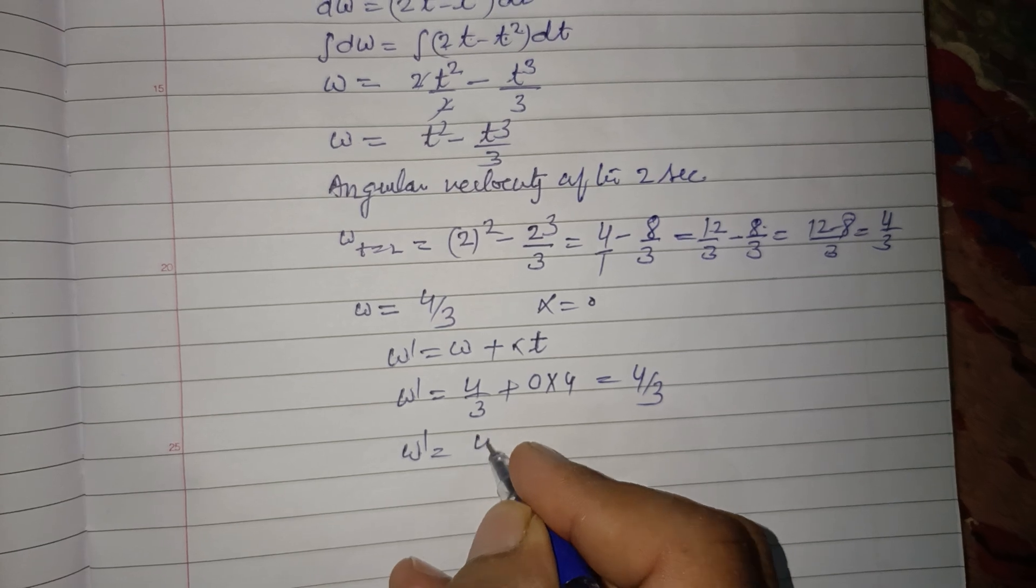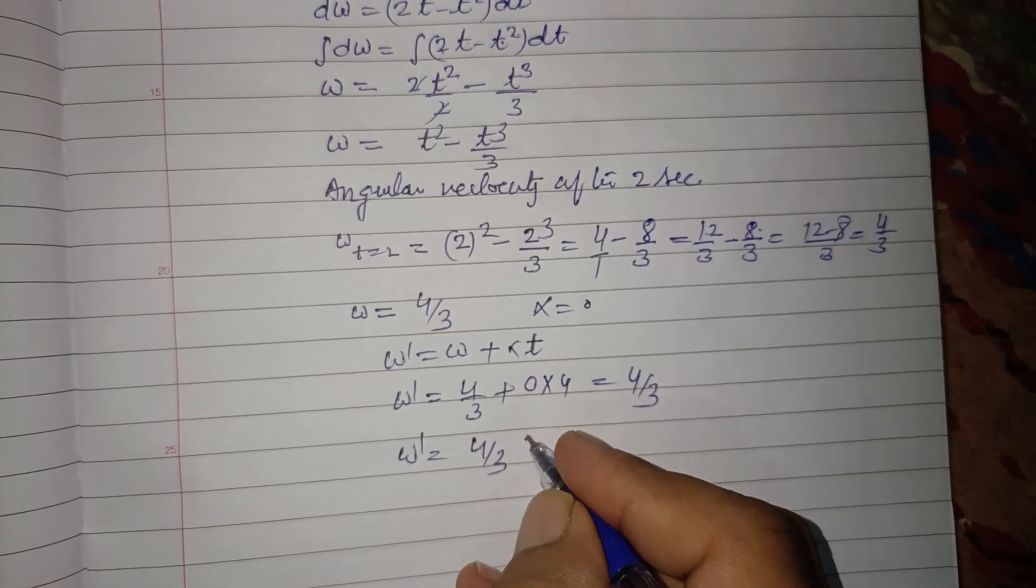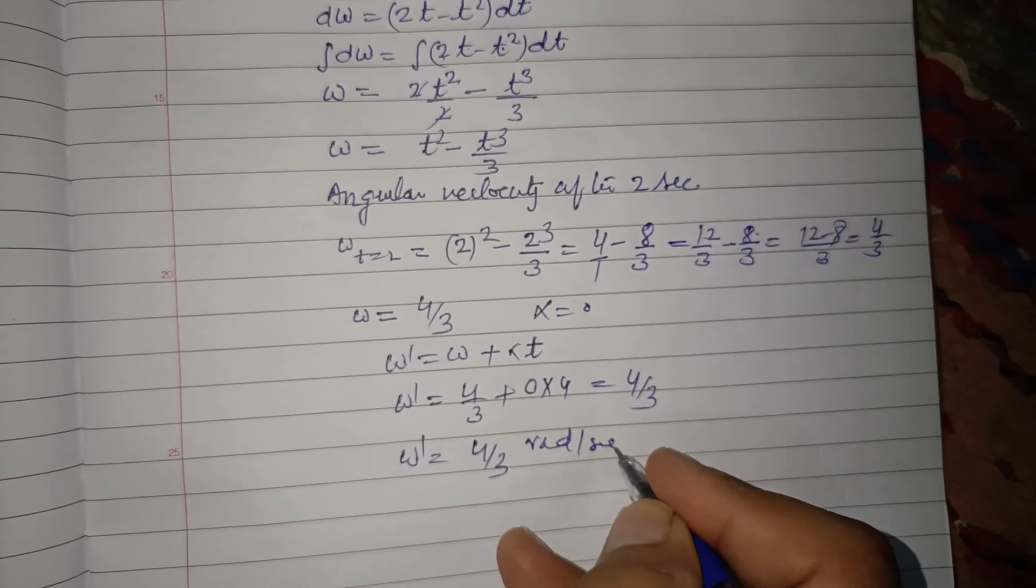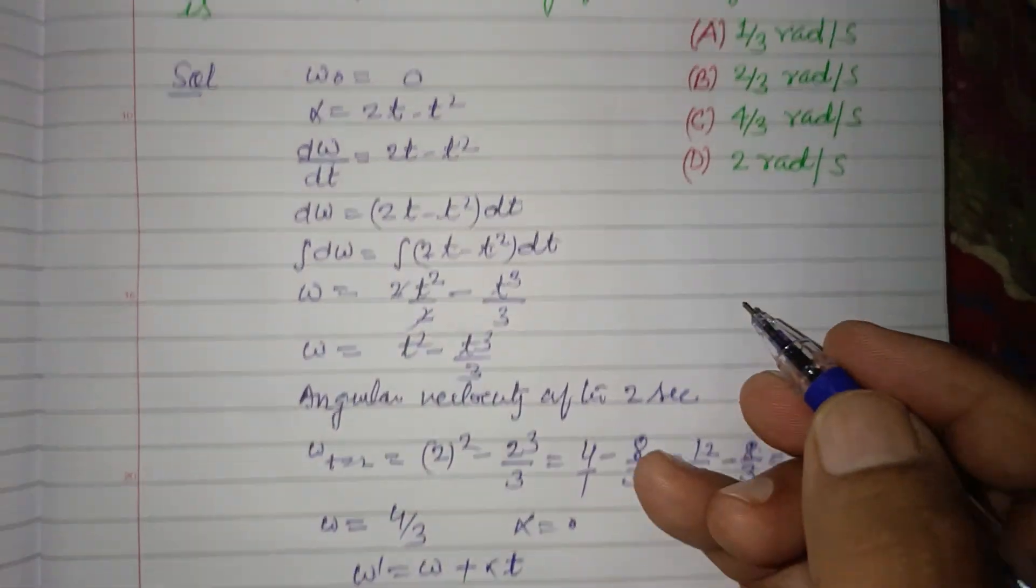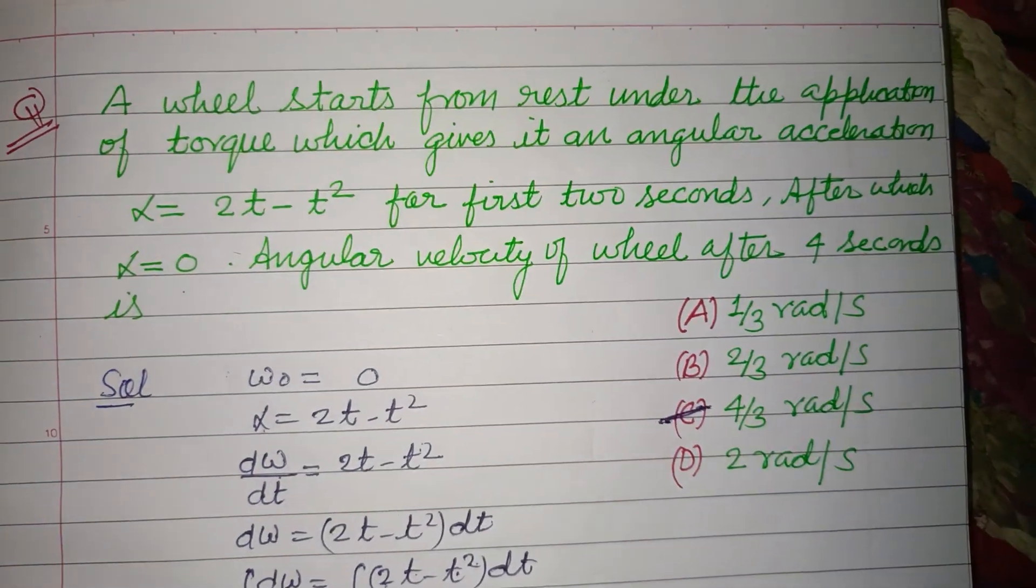So ω' equals 4/3 radians per second. This is our answer which is found in option C, so option C is correct.